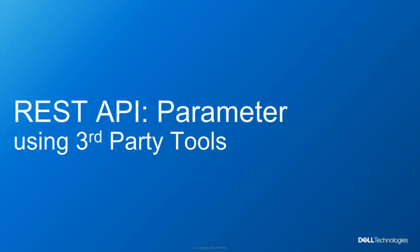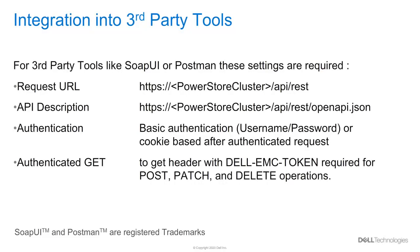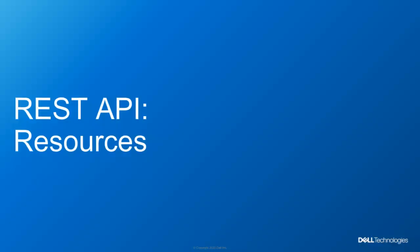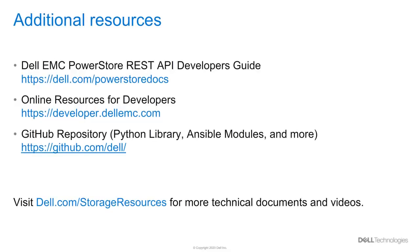If you plan to use any third-party tool for management, here is some common reference information. The request URL for REST API is https://<cluster IP or hostname>/api/rest. An API description is available at that URL plus /openapi.json. Basic authentication or cookie-based authentication is required. For POST, PATCH, and DELETE operations, it's required to request the CSRF token with an authenticated GET request. The last slide shows useful resources for using the PowerStore REST API.